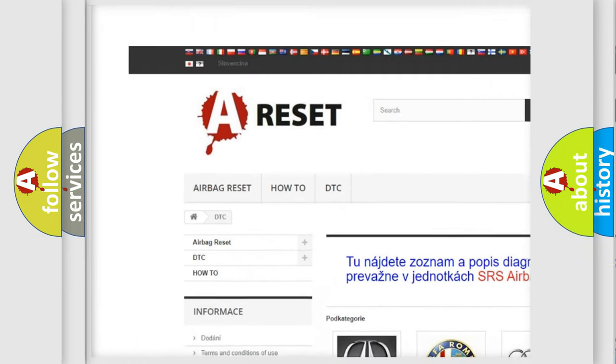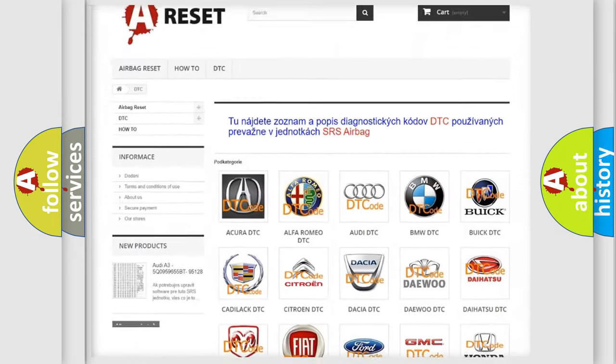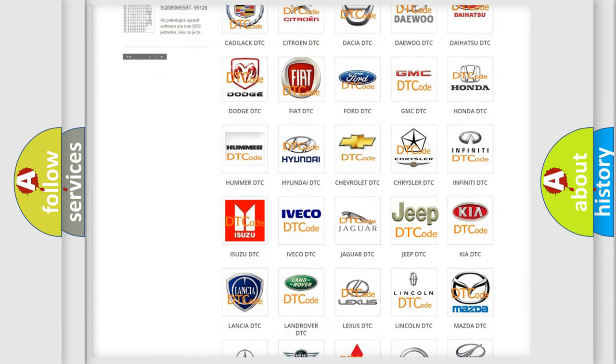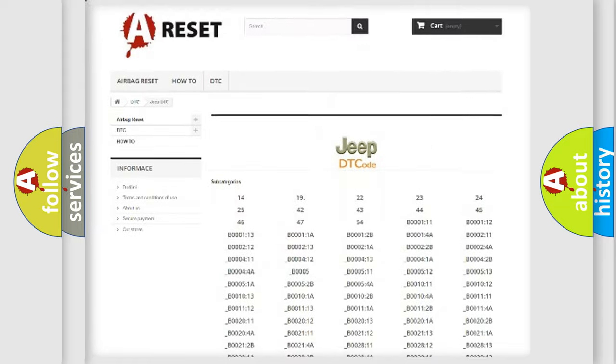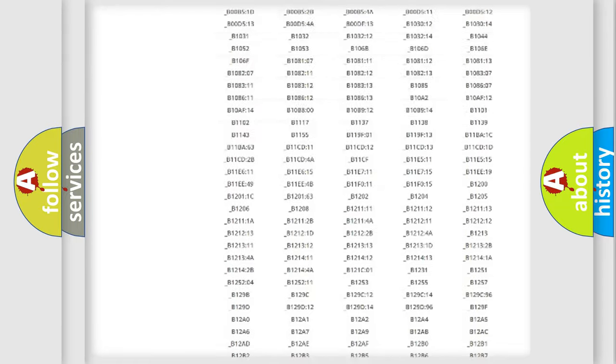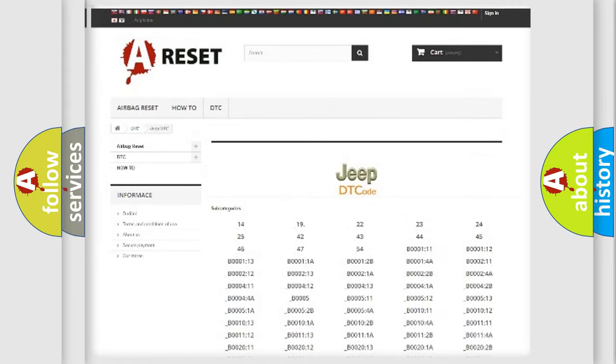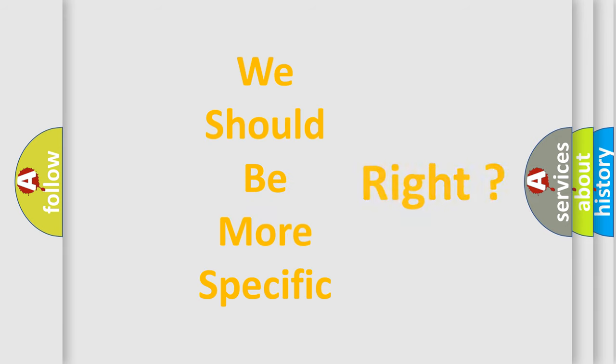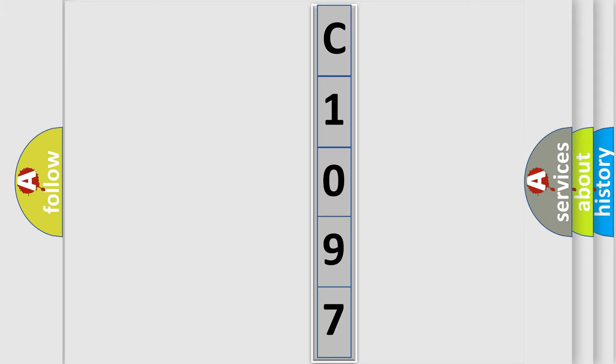Our website airbagreset.sk produces useful videos for you. You do not have to go through the OBD2 protocol anymore to know how to troubleshoot any car breakdown. You will find all the diagnostic codes that can be diagnosed in Jeep vehicles, and also many other useful things.